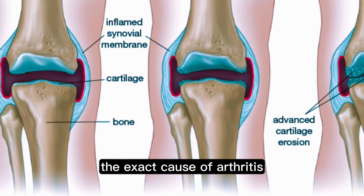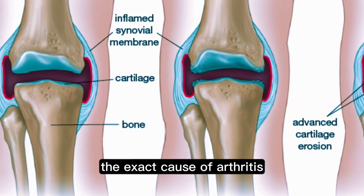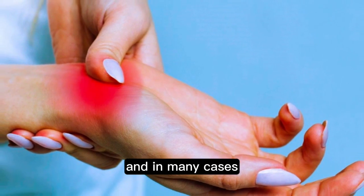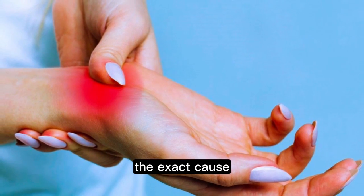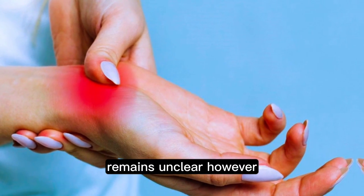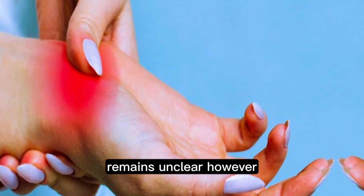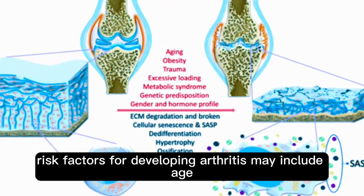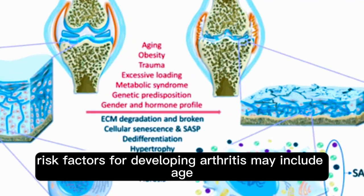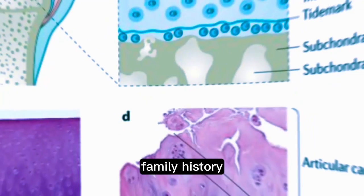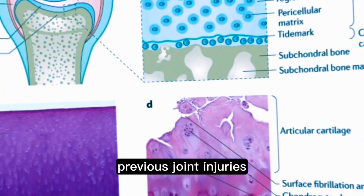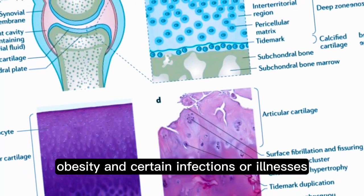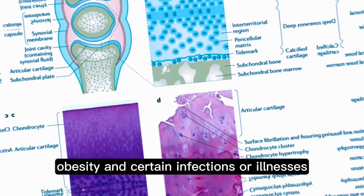The exact cause of arthritis depends on the type, and in many cases the exact cause remains unclear. However, risk factors for developing arthritis may include age, family history, previous joint injuries, obesity, and certain infections or illnesses.